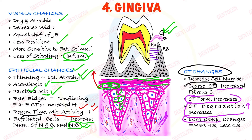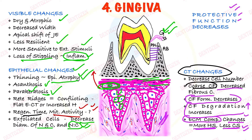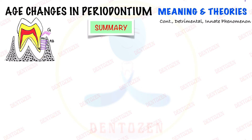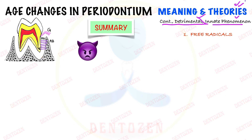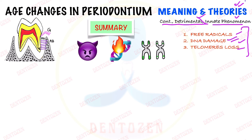Regarding the extracellular matrix component, there is more heparin sulfate and less chondroitin sulfate seen with aging. Overall, gingiva loses its protective function, and healing becomes slower. Regarding the meaning of aging, it is a continuous, detrimental, and innate phenomenon — a time-related phenomenon. Three theories explain it: free radicals causing damage, DNA damage due to faulty genes, and telomere loss.